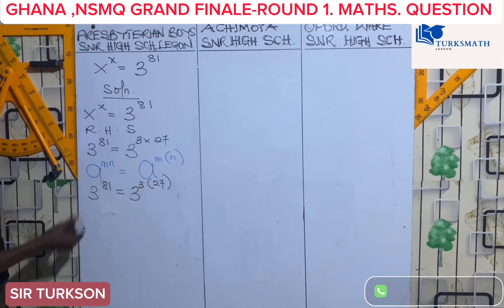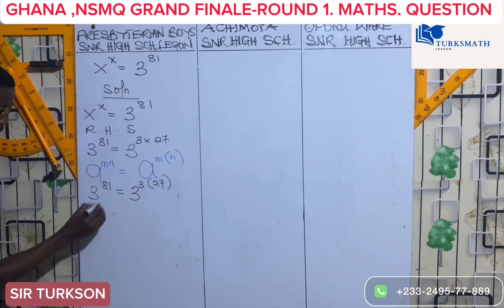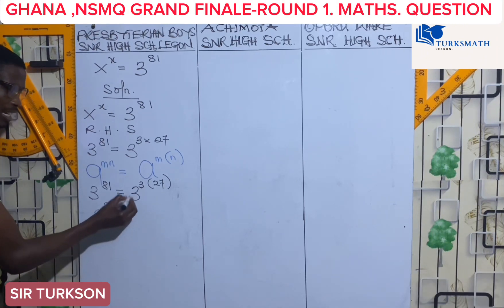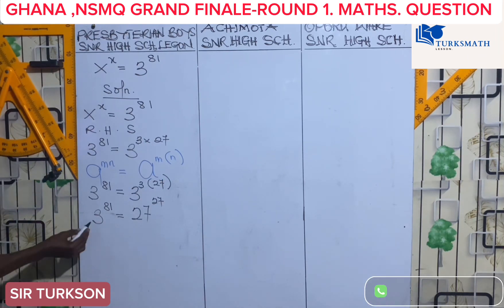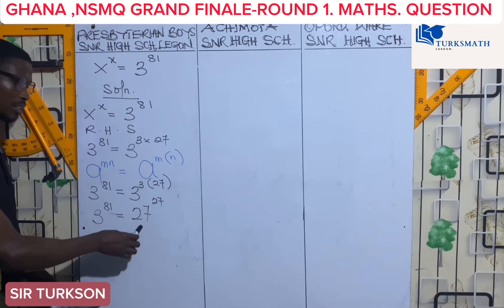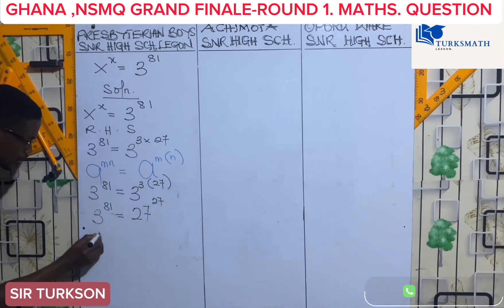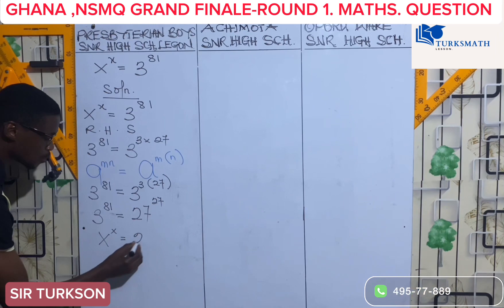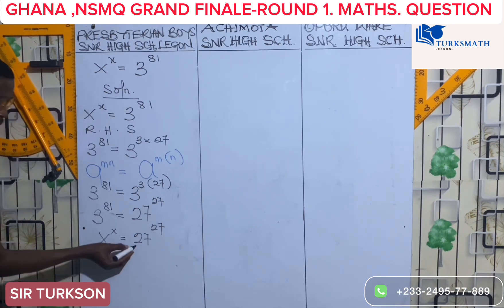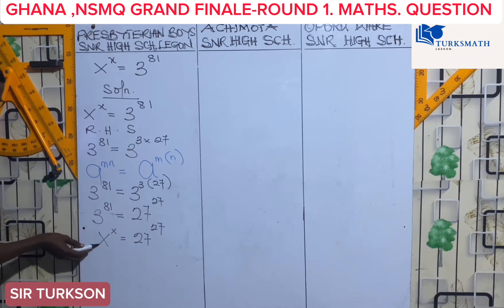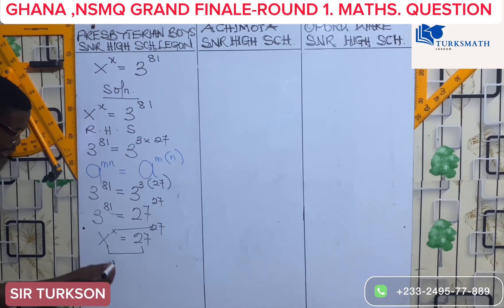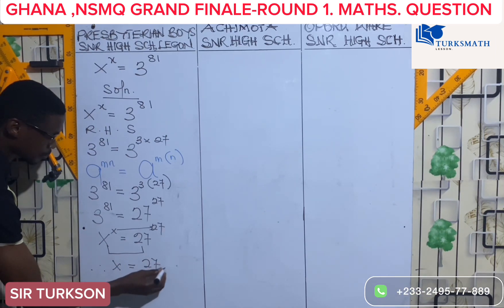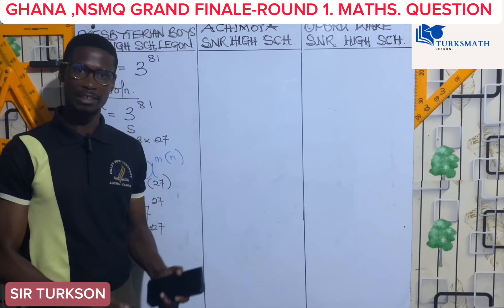Since 3 exponent 3 will give us 27, we can say that 3 exponent 81 is equal to 27 exponent 27. So we now have x exponent x equal to 27 exponent 27. The base and exponent on the right are the same, and we match the left side too. Therefore, x is equal to 27, which was the answer Presbyterian Boys gave.